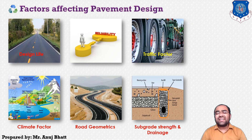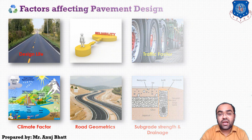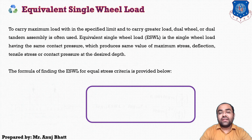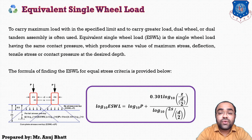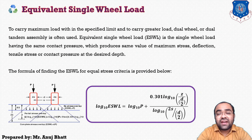The next topic is the load we generally consider for designing the pavement — the Equivalent Single Wheel Load (ESWL). To carry the maximum load within the specified limit and to carry greater loads, dual wheels or dual tandem assemblies are often used.